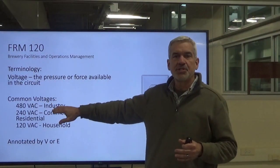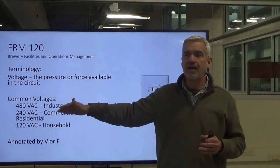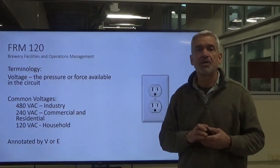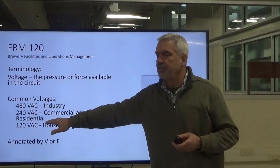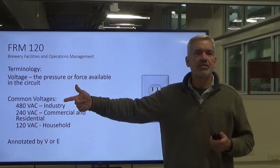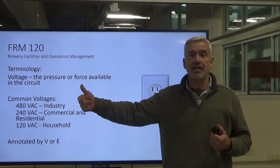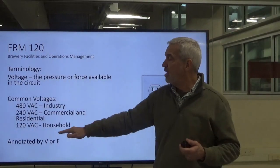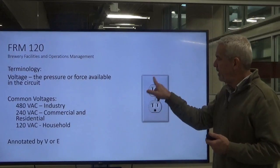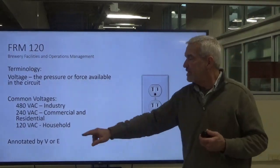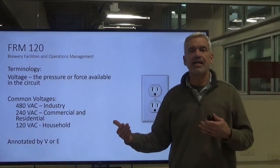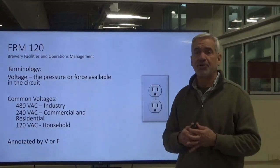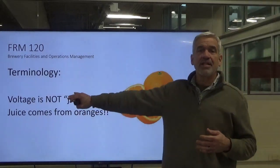So in common voltages, there are 480 volts — you'll see that a lot with industry. I worked with a lot of 480-volt systems when I was out in industry for many, many years. 240 volts in residential and commercial areas: you'll see 240 run your dryer, your range or stove if it's electric, and your HVAC or heating and air conditioning system. And 120 is very common in an outlet like this that you'll see in your homes. It's annotated with a V or an E — V being voltage or E for electromotive force.